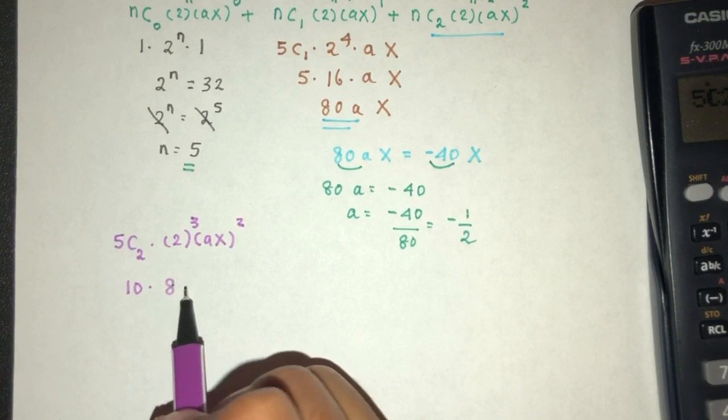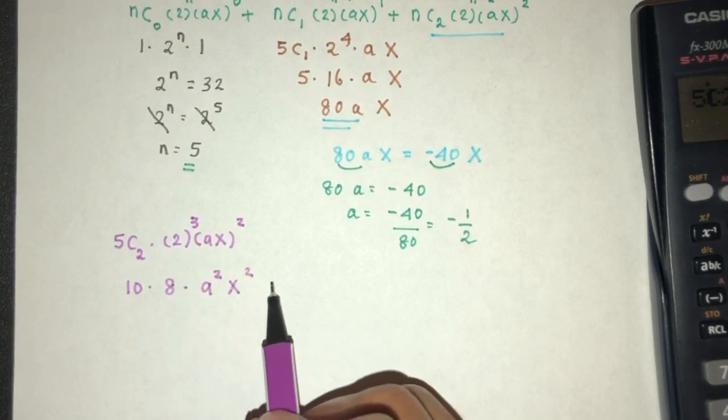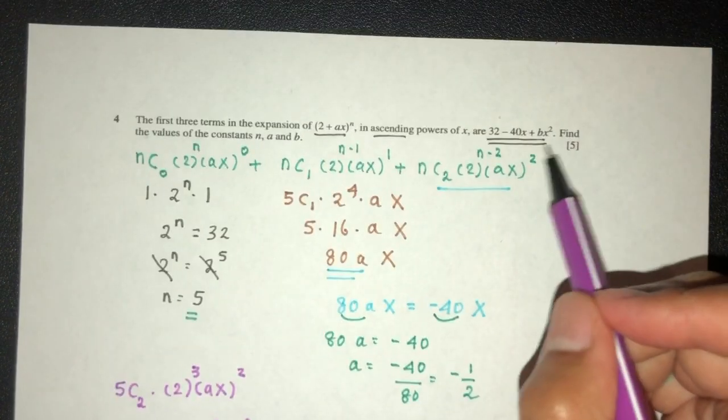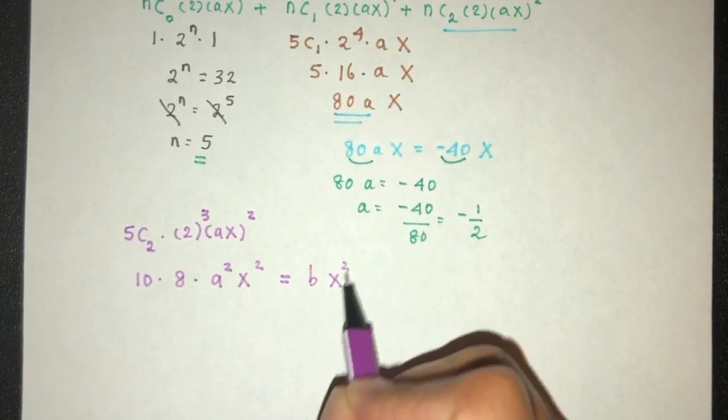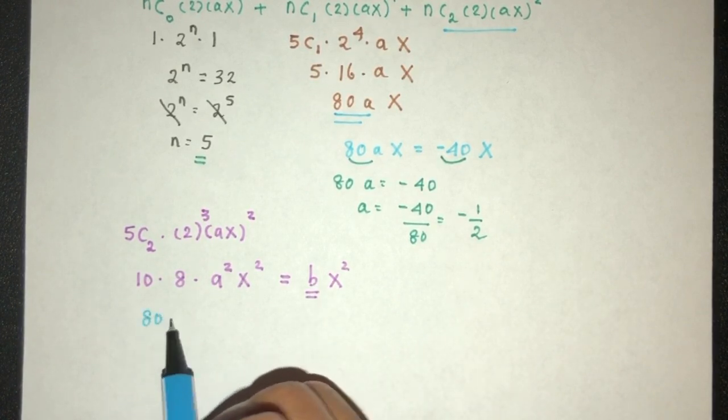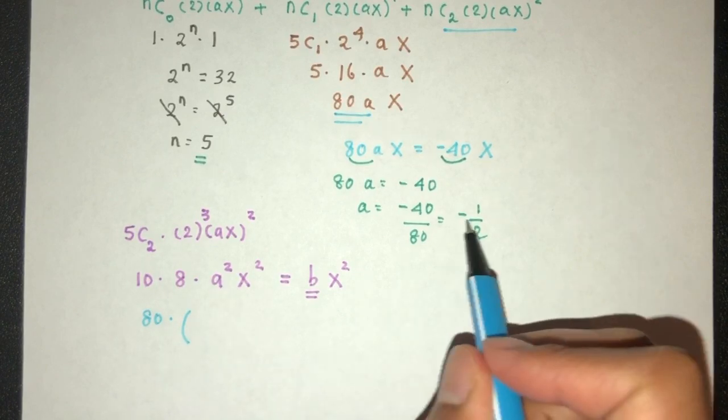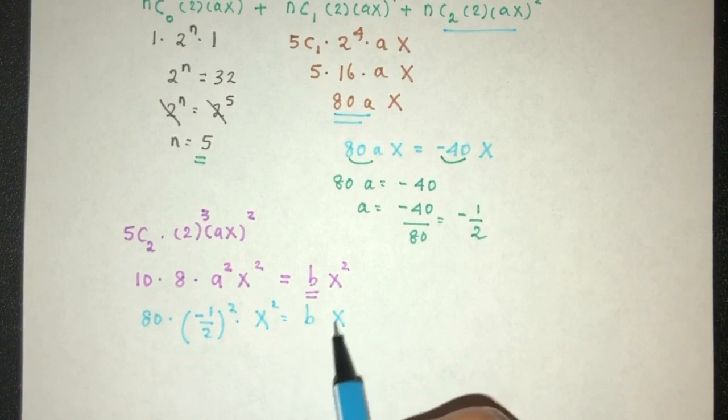So 10, that should be 2 power 3 will be 8. A square, this will be x square. Now, we know this is given by bx square. So, let's find out what is the value of b. So here we have 80 times ax square. a square is minus half square, x square is equal to bx square.